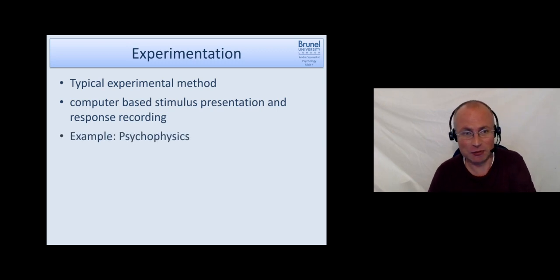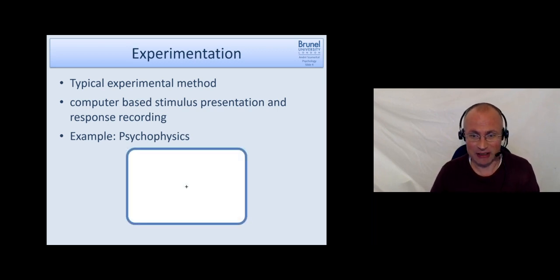A typical example and very early example is psychophysics. Suppose this is your screen, the computer screen. Most of the time in these experiments there's a little cross called a fixation cross where participants are asked to look. Then you may present them two stimuli, in this case two gray squares, and you ask them which one is the brighter of the two squares. Depending on the screen settings, if you can't see it, this one is the brighter one.